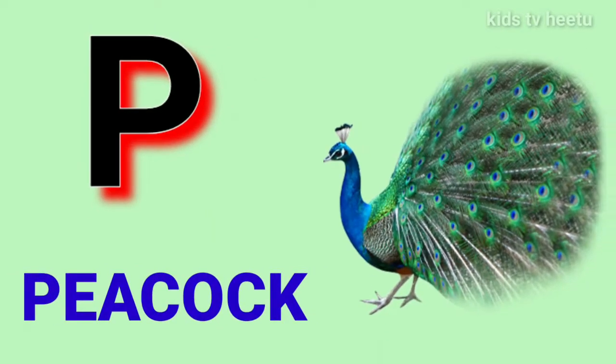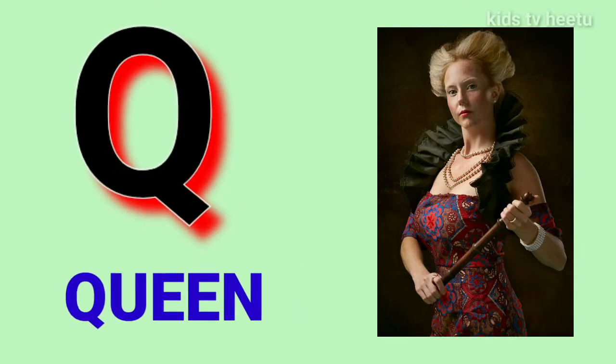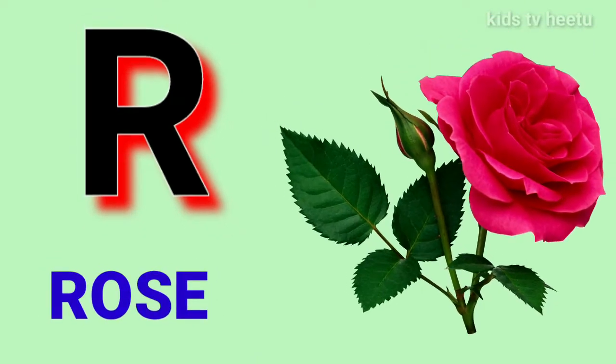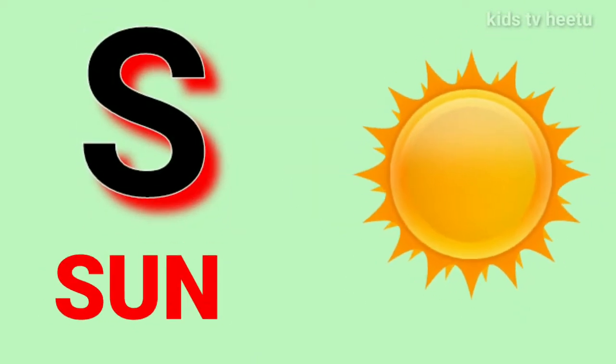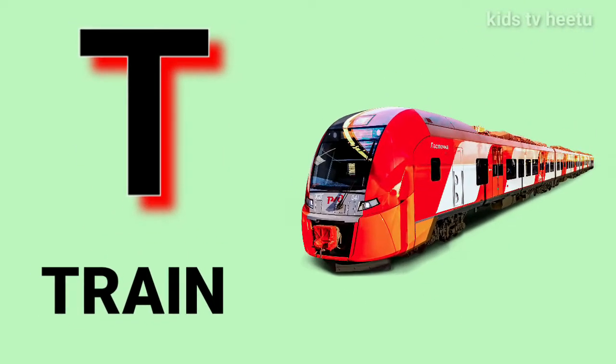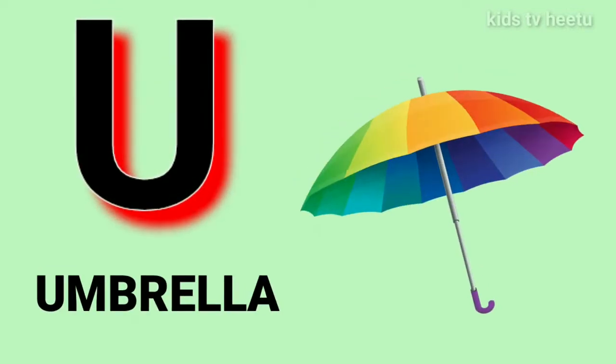B for pico, Q for wing, R for roach, S for sun, T for train.